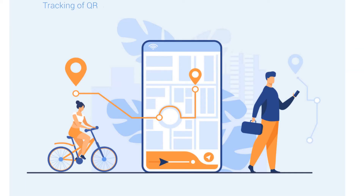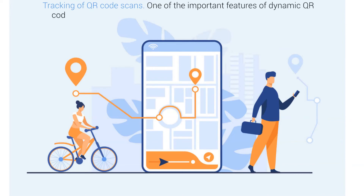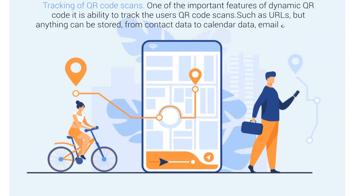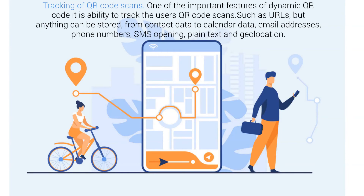The second benefit is tracking of QR codes. This is one of the most important features of a dynamic QR code — the ability to track the user's QR code activity. You can store amazing things like URLs, contact data, calendar data, email addresses, phone numbers, SMS, plain text, and geolocation. Now you know how amazing this dynamic QR code is — it is a really great tool for marketing.